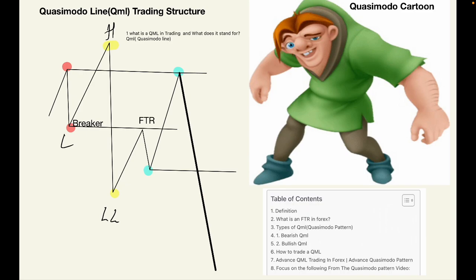This one has been long overdue, so I'm sure most of you have been asking a lot of questions. What is a QML and what does it stand for, and how to actually get to trading successfully?